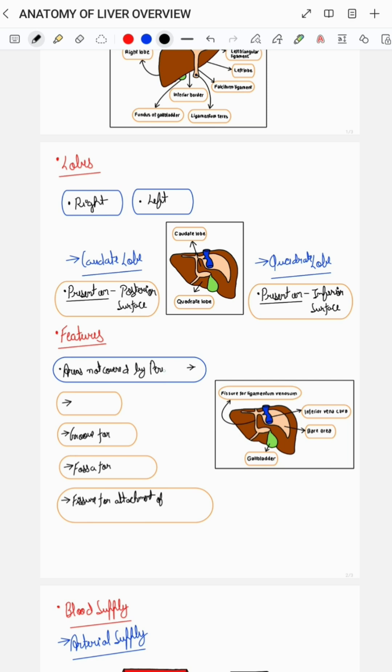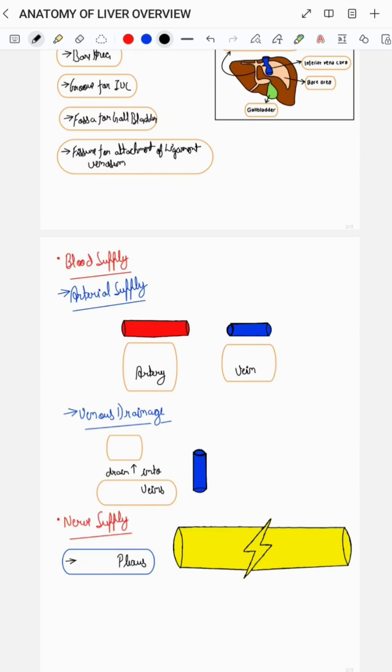Areas of liver not covered by peritoneum include the bare area, the groove for inferior vena cava, the fossa for gallbladder, and the fissure for attachment of ligamentum venosum. As you can see in this diagram.